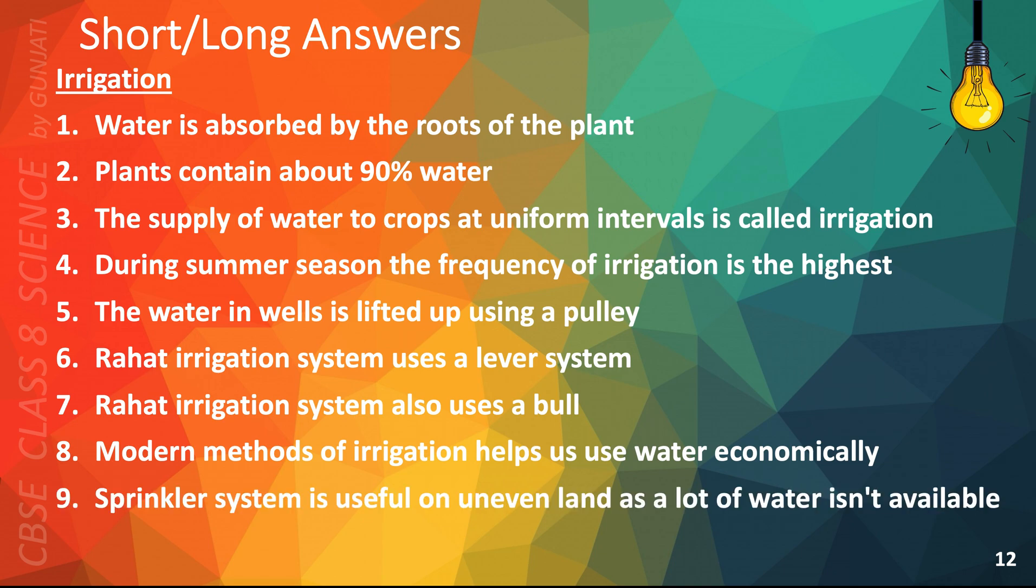Sprinkler system is useful on uneven land where a lot of water isn't available. In drip system, water falls drop by drop near the roots.